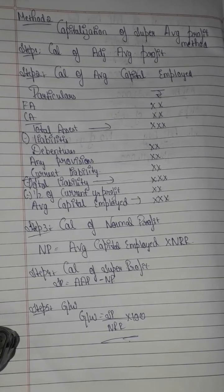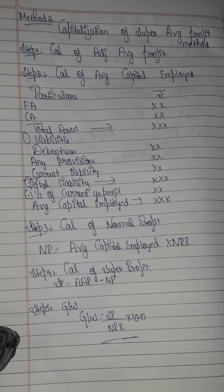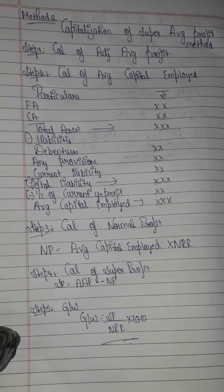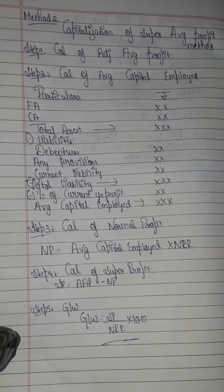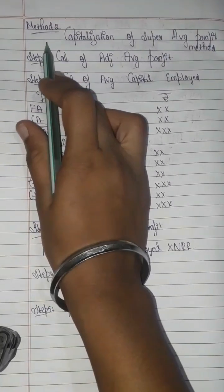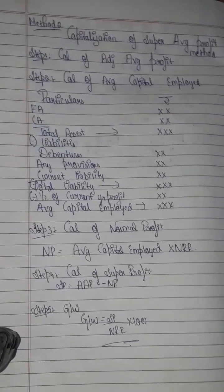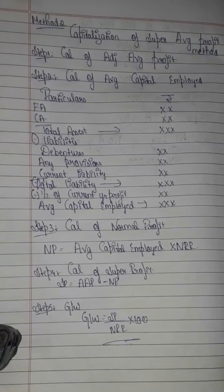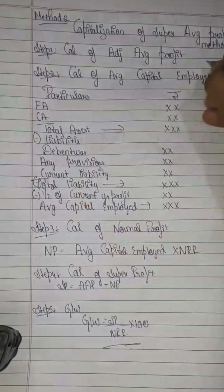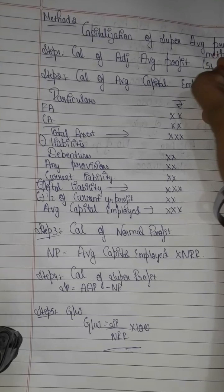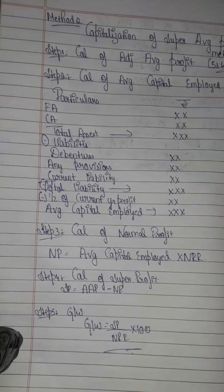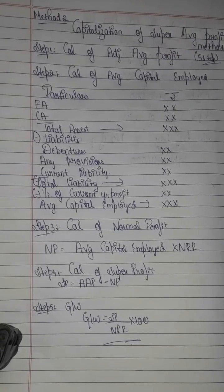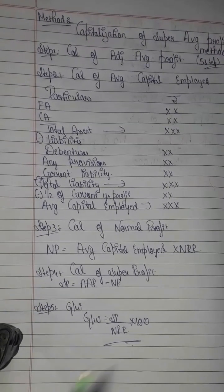In my previous video, I explained the valuation of intangible assets and the valuation of goodwill Method 1. So in this video, Method 2 is the capitalization of super profit method. I will explain this method in five steps. This question can carry 6 marks or 12 marks.